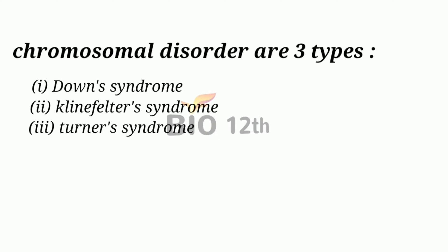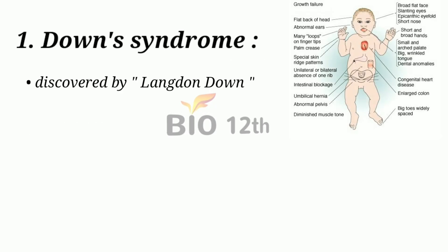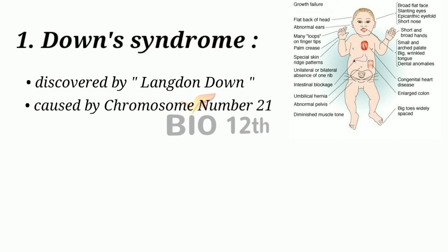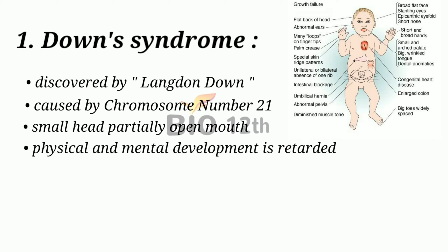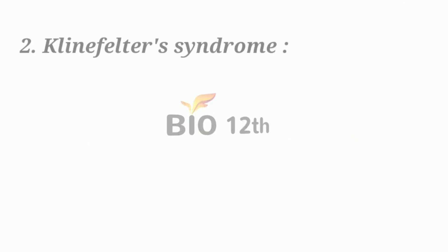First, Down syndrome. It was discovered by Langdon Down. It is caused by chromosome number 21. Its symptoms are small head and partially open mouth, and physical and mental development is retarded.